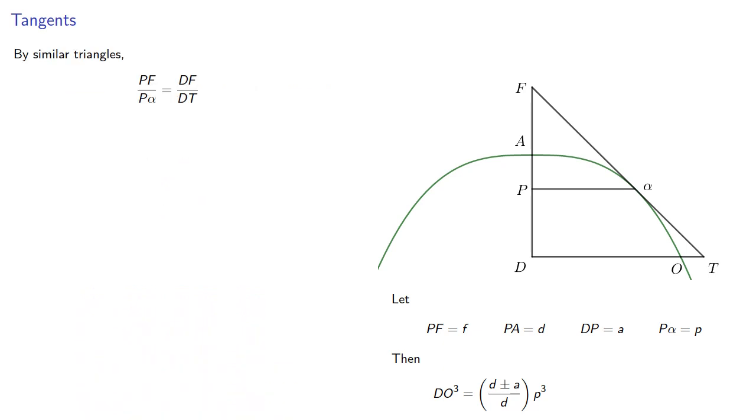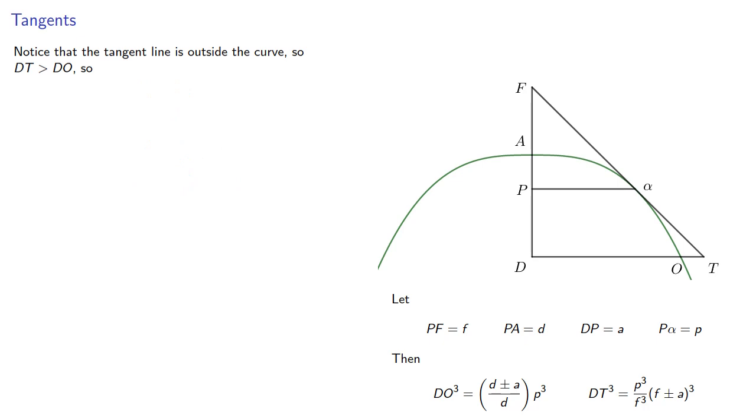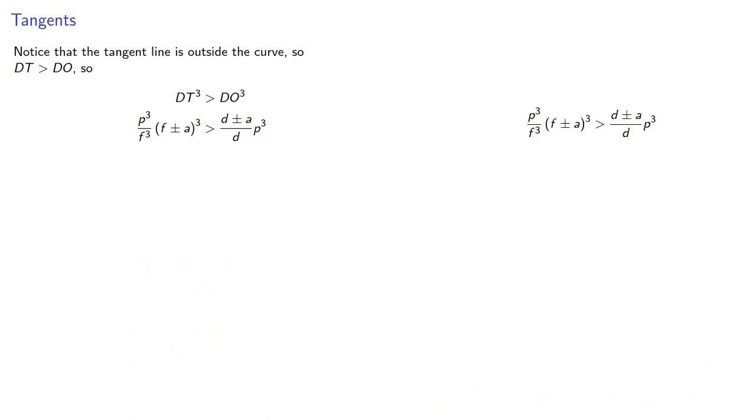Now by the properties of similar triangles, the ratio PF to P alpha is DF to DT. Remember PF is F, P alpha is P, DF again is going to be F plus or minus some amount. And so now we can solve for DT, and then for DT cubed. Notice the tangent line is outside the curve, so DT is greater than DO, which means that DT cubed wants to be greater than DO cubed. Substituting in our values, we can simplify this.